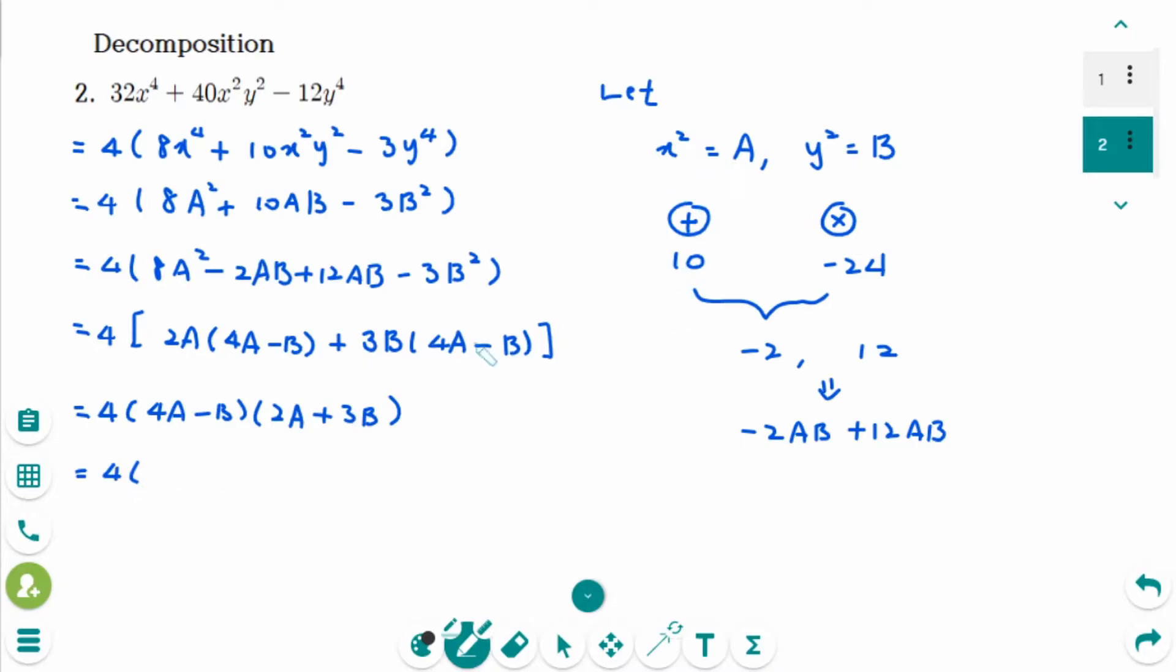4A was x squared. So 4x squared minus B was y squared. And 2x squared plus 3y squared. But this is not the final answer.